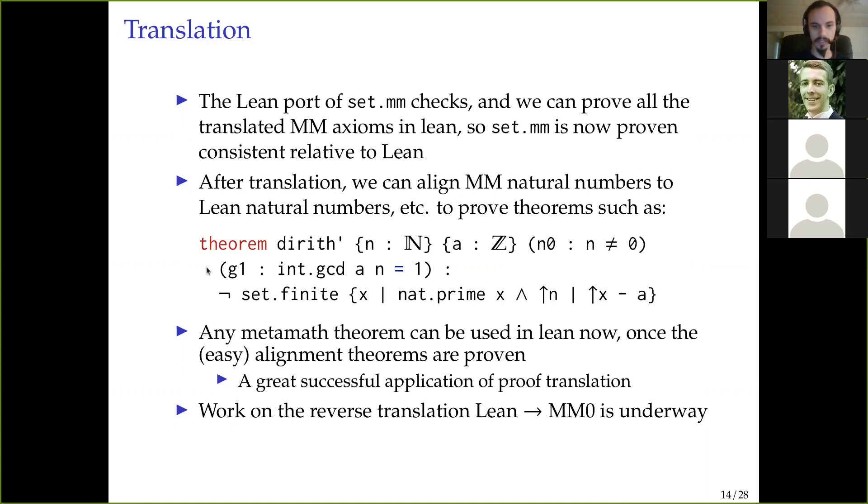And the translator, as I said, has been used to losslessly translate the entire ZFC library into MM0. And the HOL, I basically have an implementation of HOL, which checks this correctness. The Lean port, so if you compose all of those translations, you get a translation from MetaMath to Lean. And MetaMath has a big library, and Lean has a big library, so this is actually kind of nice. We can now take all of MetaMath and stick it inside of Lean.